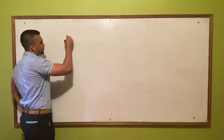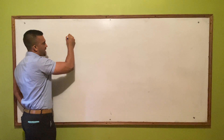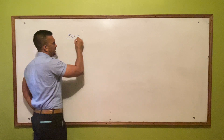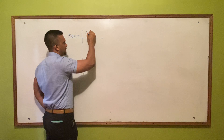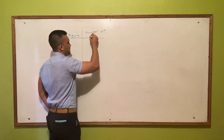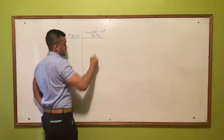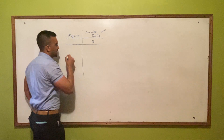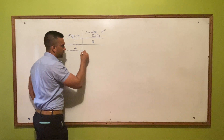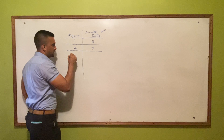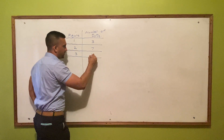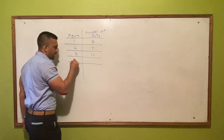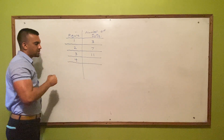Now let's say a question is given. We have a table where we have a figure and the number of dots. The first figure has 3 dots, the second figure has 7 dots, the third figure has 11 dots. The question will ask us to find out the number of dots for the fourth figure.